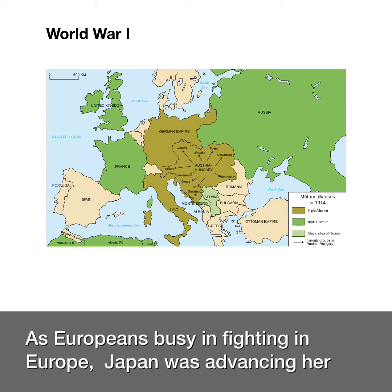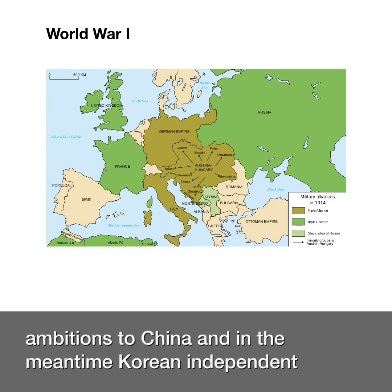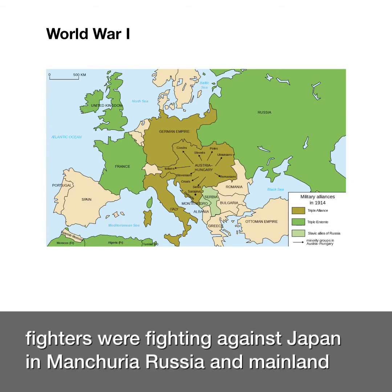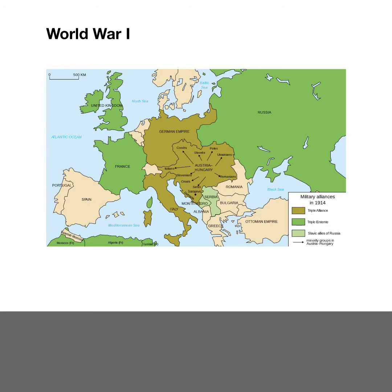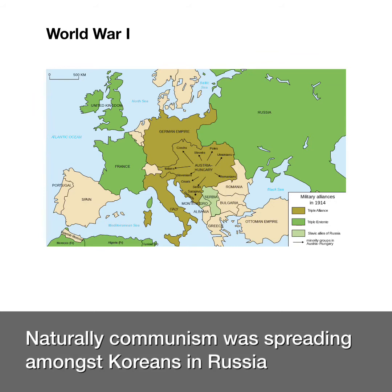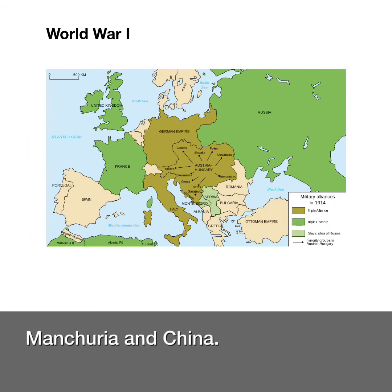As Europeans were busy fighting in Europe, Japan was advancing her ambitions in China. In the meantime, Korean independence fighters were fighting against Japan in Manchuria, Russia, and mainland China. Naturally, Communism was spreading amongst Koreans in Russia, Manchuria, and China.